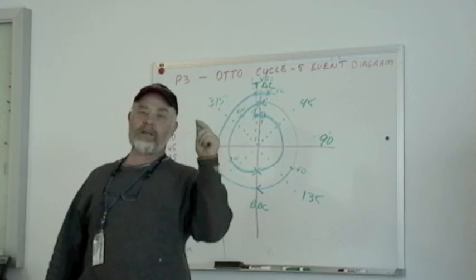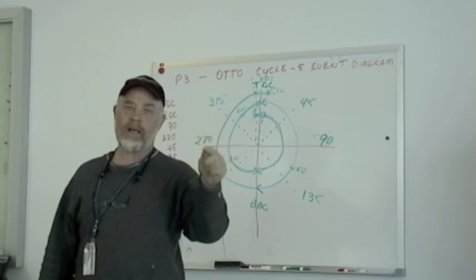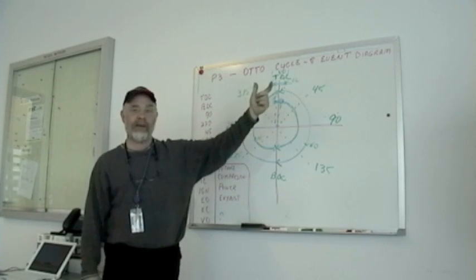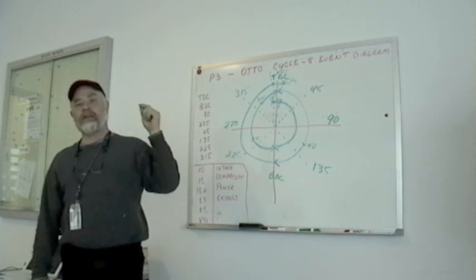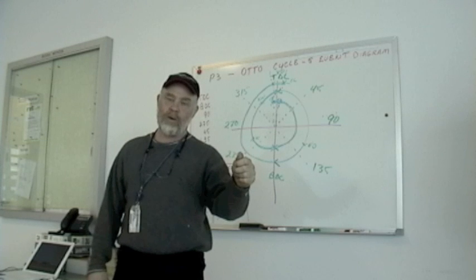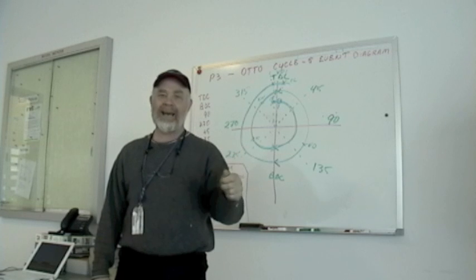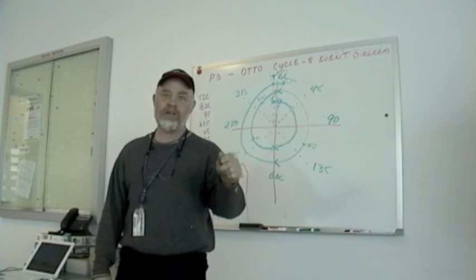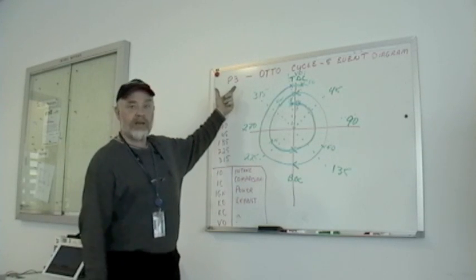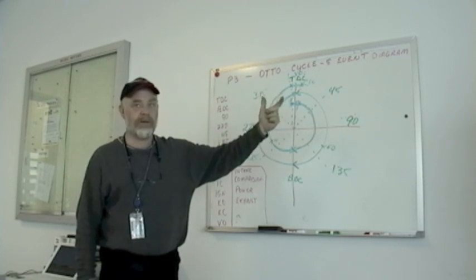The purpose of valve overlap is to increase horsepower and increase cooling. The point of knowing the auto cycle five event diagram is that if your reciprocating engine is going to create the most horsepower, then the valves must open and close at exactly the precise moment in relation to the piston. This was Project Three: the Auto Cycle Five Event Diagram of a reciprocating engine.